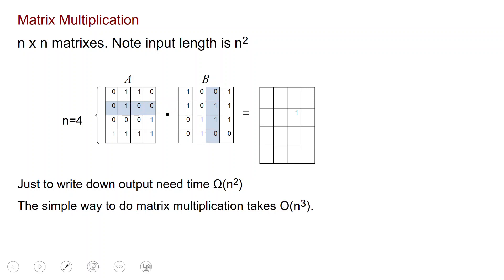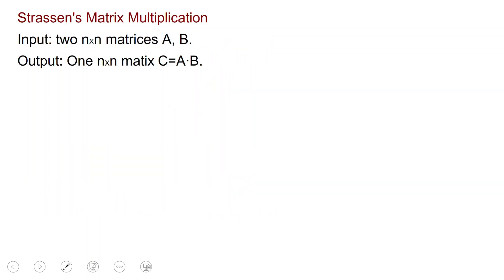So the simple way takes time n cubed. And after Karatsuba we are naturally going to ask if you can do any better. And as you may expect, the answer is yes. Strassen famously gave a faster algorithm for matrix multiplication. Again, the input is two n by n matrices A and B, and the output is the product matrix C. Strassen is a striking example of a divide-and-conquer algorithm.